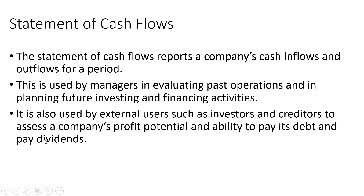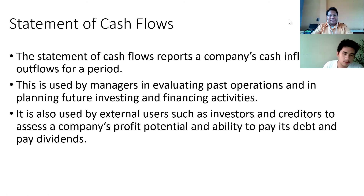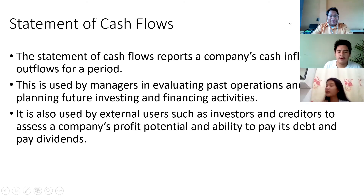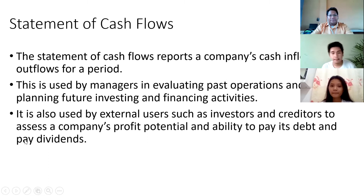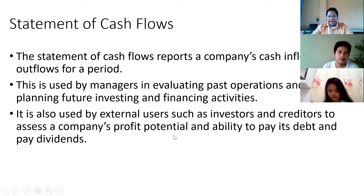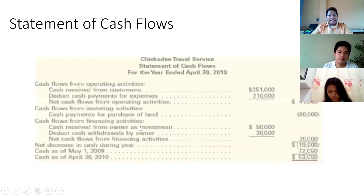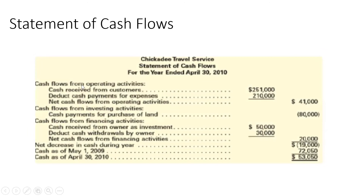In a corporate structure, dividends can only be declared if there is enough cash — a surplus of cash before dividends are declared and distributed among members. The statement of cash flows has three categories: operating activities, investing activities, and financing activities.